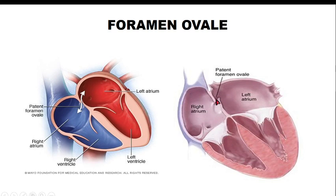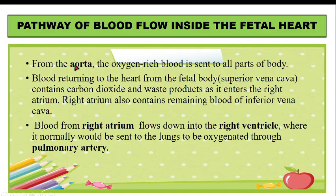The foramen ovale is an opening between the right atrium and left atrium. The right atrium receives blood from the superior vena cava, the inferior vena cava, and additional blood via the ductus venosus, making the right-side pressure higher. As pressure is higher on the right, blood flows from the right atrium to the left atrium through the foramen ovale. From the left atrium, blood goes to the left ventricle, then to the aorta, and is distributed to all parts of the body.